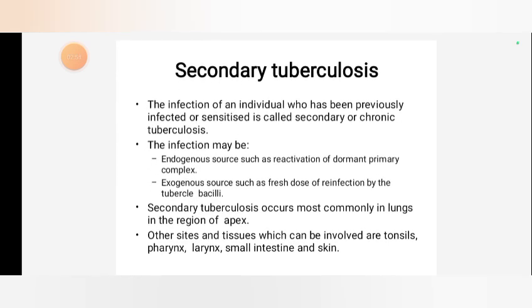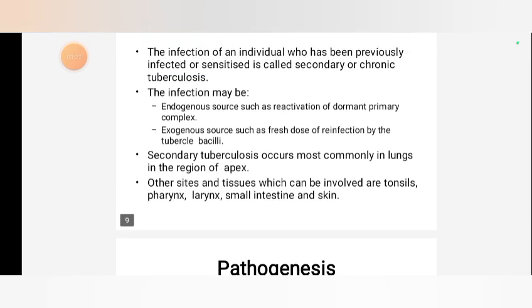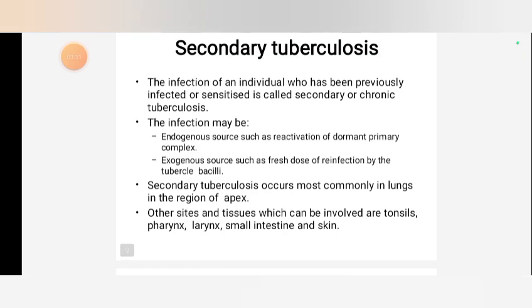Secondary tuberculosis is the infection of an individual who has been previously infected or sensitized; also called chronic tuberculosis. The infection may be endogenous, such as reactivation of a dormant primary complex, or exogenous, such as a fresh dose of reinfection by the tubercle bacilli. Secondary tuberculosis occurs most commonly in the lungs, in the region of the apex. Other sites that can be involved are tonsils, pharynx, larynx, small intestine, and skin.